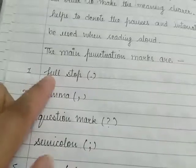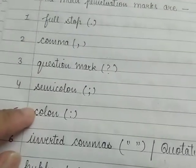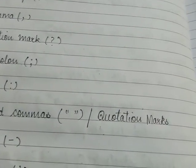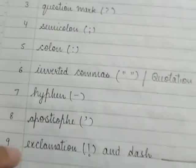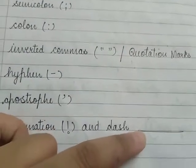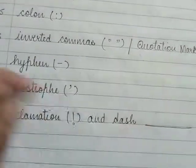Punctuation marks are full stop, comma, question mark, semicolon, colon, inverted commas which are also called quotation marks, hyphen, apostrophe, exclamation mark, and dash that you usually see in the fill in the blanks.